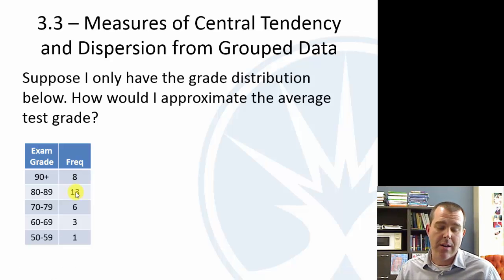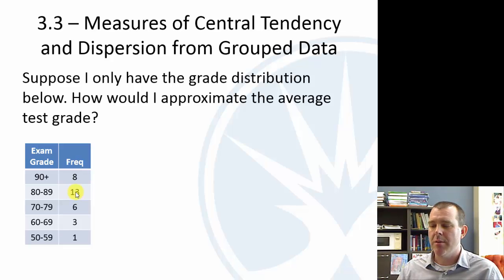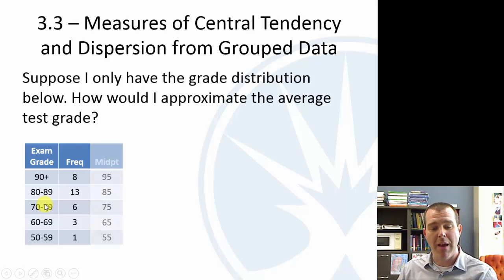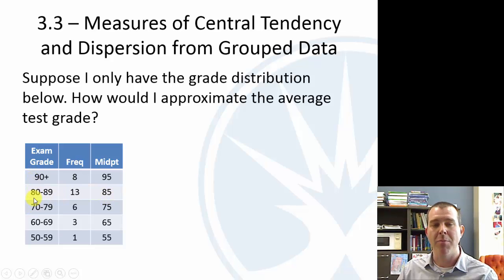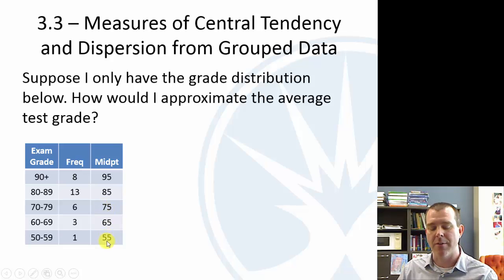I want to find an average, but this isn't perfect. We're going to talk about what your textbook recommends and then what might be better. Your textbook suggests treating each class as its midpoint: so 80 to 89 has a midpoint of 85, 70 to 79 has a midpoint of 75, and so on.